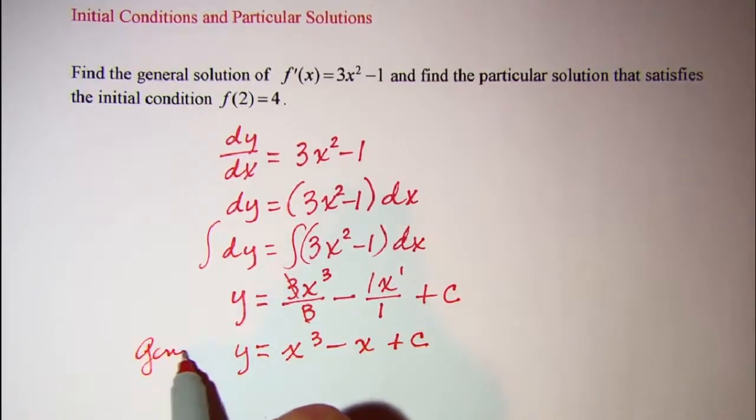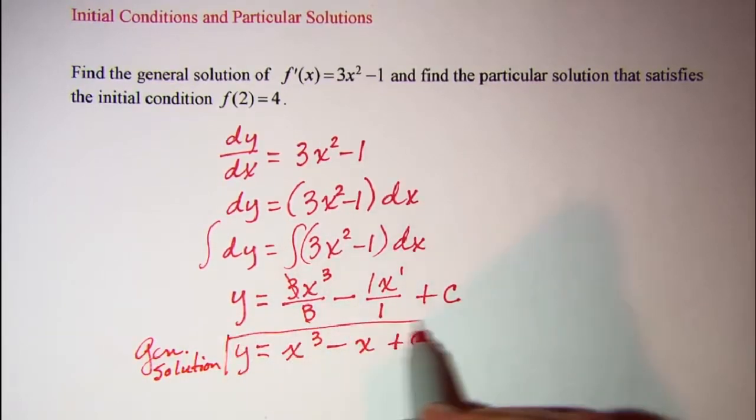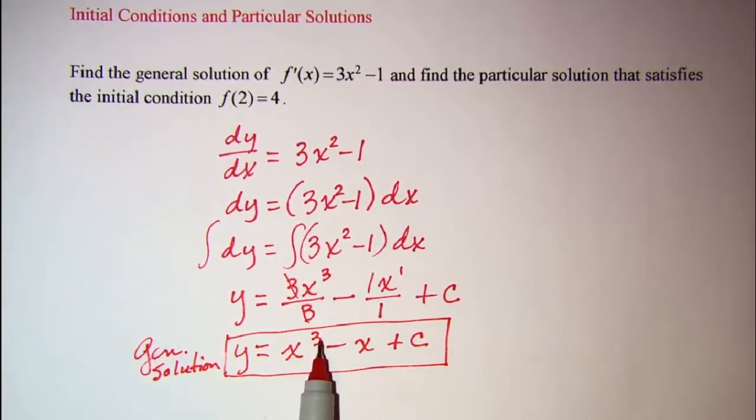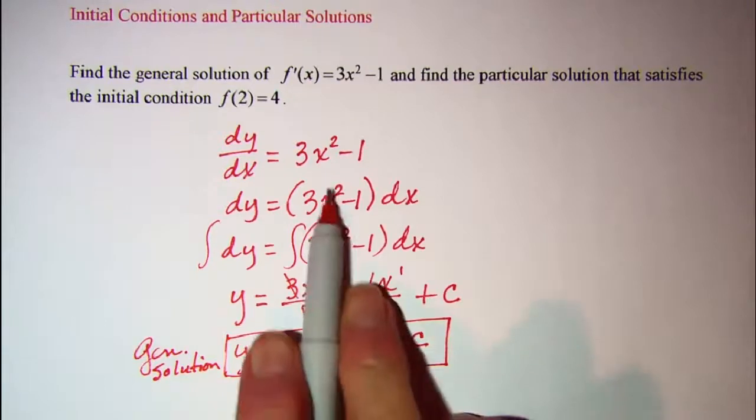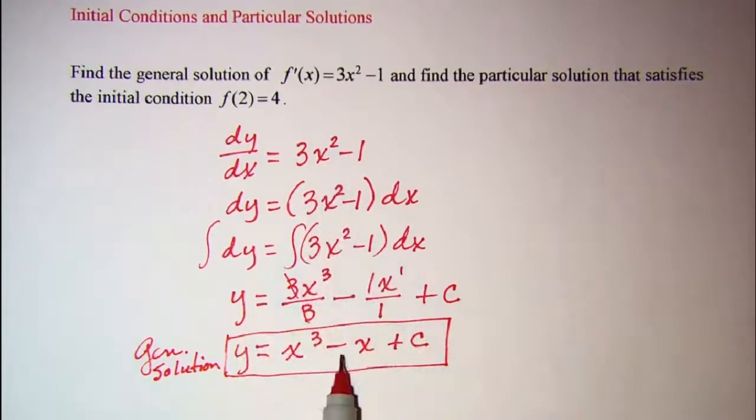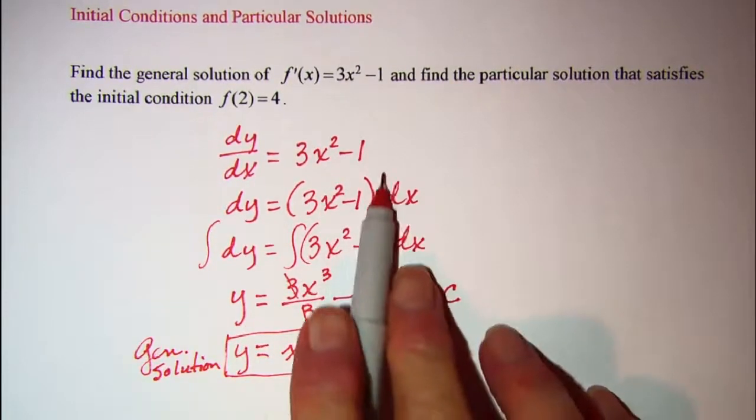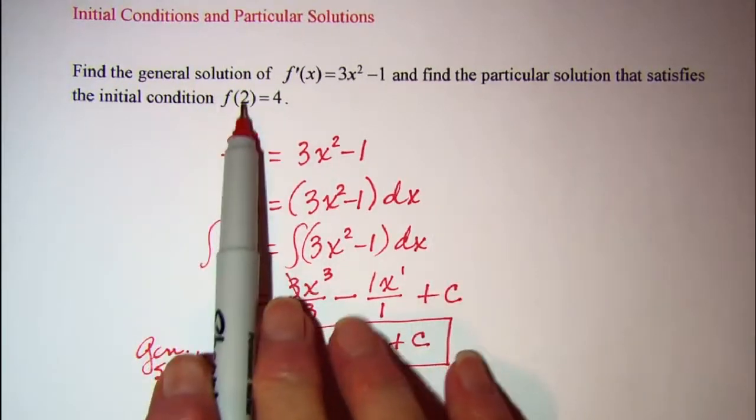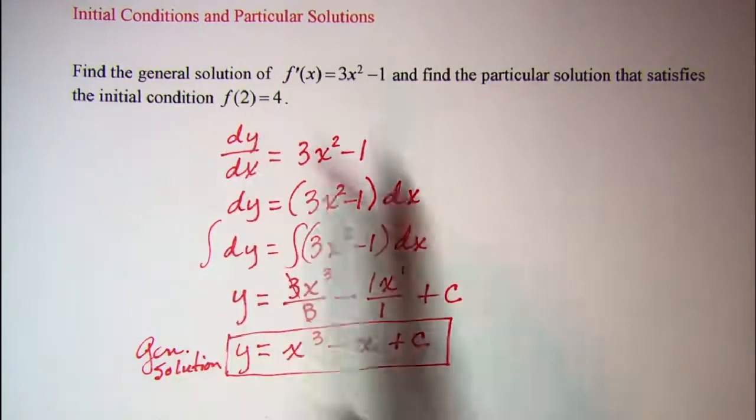I can check that by using the power rule: 3x² - that's what I had there - and then minus 1 and then plus 0, so I know that this is right. Then my initial condition is f(2) = 4.